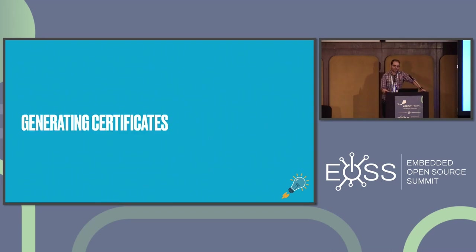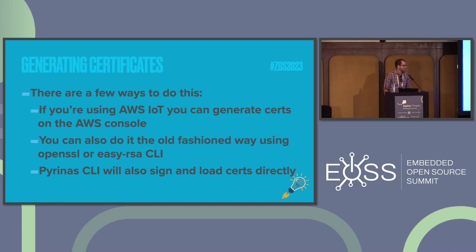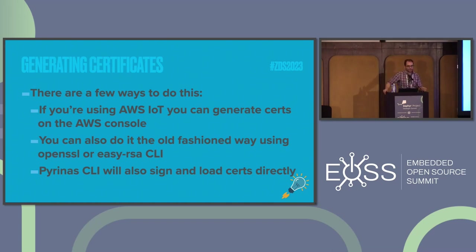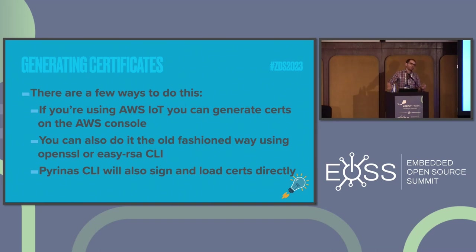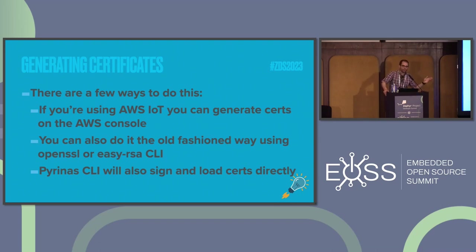Let's talk about generating certificates. There are a bazillion different ways to do this. For example, if you're using AWS, many of you have gone to their IoT, created a device, and one of the first things they suggest is to create a certificate for your device. You can also do it the old-fashioned way using the OpenSSL CLI. EasyRSA is a wrapper around that which organizes everything — puts your CA cert here, your server cert here, and per-device certs in their own place. A lot of these things apply to the web world but you can also use them for generating certificates for devices.